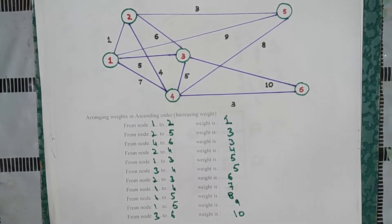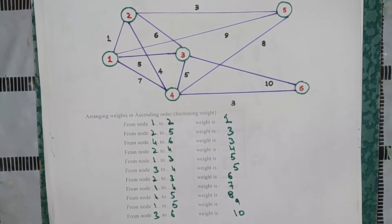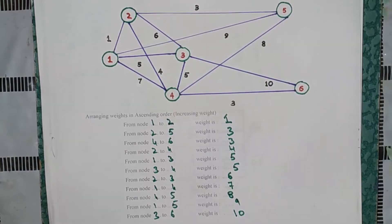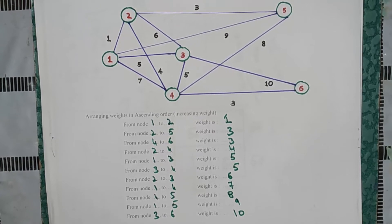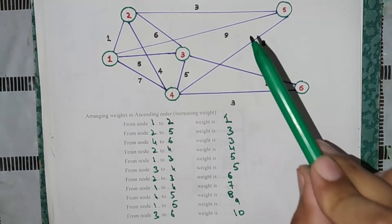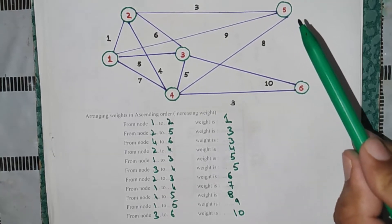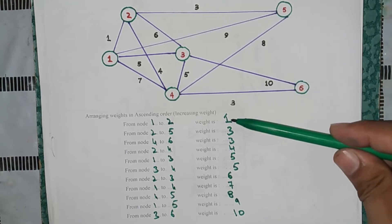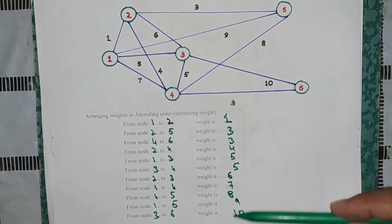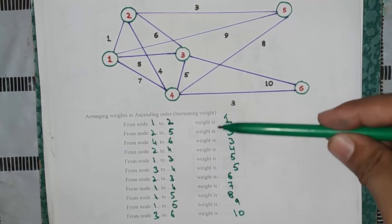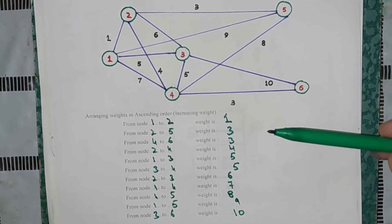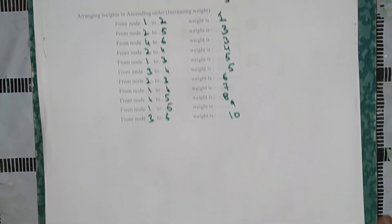Now we will build our minimum spanning tree. The number of arcs in a spanning tree is one less than the number of nodes, and all nodes must be connected. When talking about a spanning tree, the number of nodes must match those in the problem, and for minimum spanning tree, the cost must be minimized. Since we wrote the arcs in ascending order, the total weight we get will be minimum. To build the minimum spanning tree, first let us draw all six nodes.